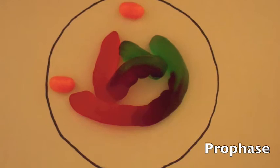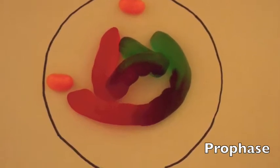The next stage is prophase. In prophase, chromosomes are replicated and the chromatin fibers become more tightly coiled.